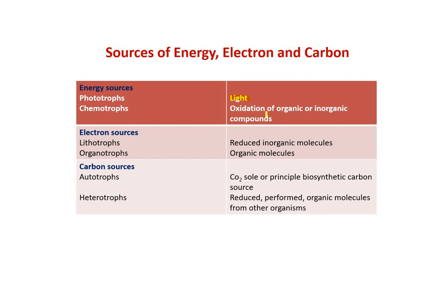Microorganisms depending on electron sources are known as lithotrophs or organotrophs. Lithotrophs rely on reduced inorganic molecules for nutrition, whereas organotrophs get electrons from organic molecules. Those organisms depending on carbon sources are known as autotrophs and heterotrophs. Autotrophs require carbon dioxide as the sole or principal biosynthetic carbon source, while heterotrophs depend on reduced, preformed organic molecules from other organisms.